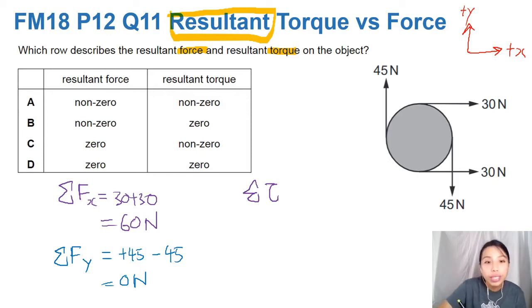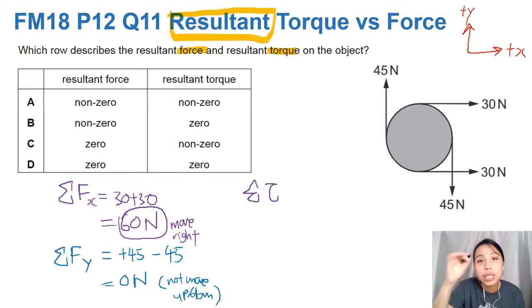It has a horizontal resultant force of 60. That's going to cause the entire object to move. Move to the right. Vertically, no resultant force, so it's not going to move up-down. Not moving up or down. That's what resultant force tells you. Is your object moving or not? Moving where? With what acceleration?